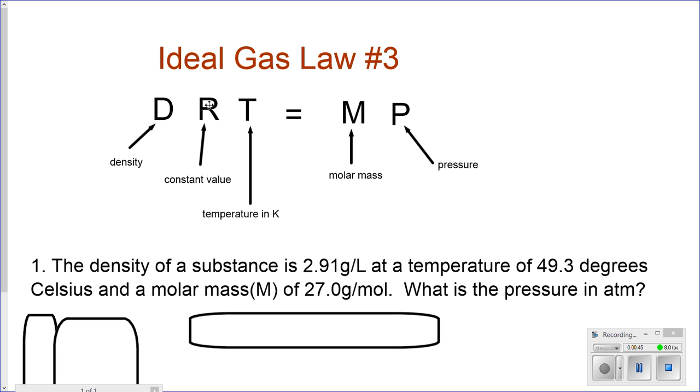R is a value that depends on the pressure. T is in kelvins. M is molar mass, which is grams over moles. And pressure, either atm, kPa, whichever pressure they want you to find.